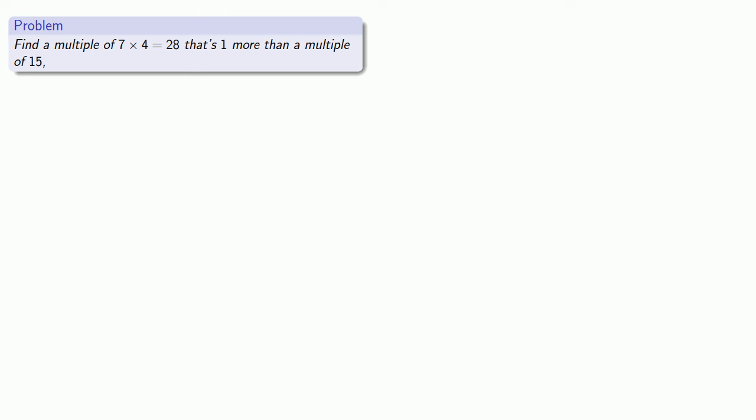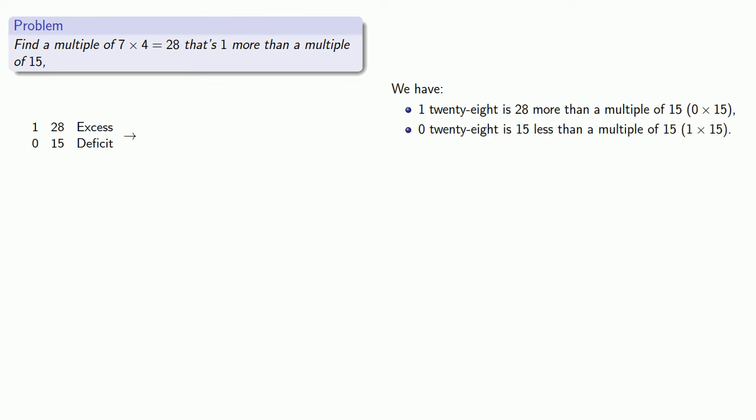Next we want to find a multiple of 7 times 4, 28, that's 1 more than a multiple of 15. 1×28 is 28 more than a multiple of 15, namely 0 times 15, and 0×28 is 15 less.